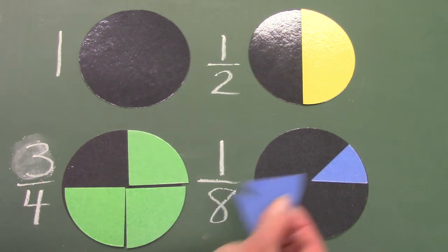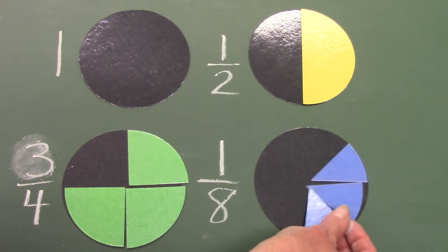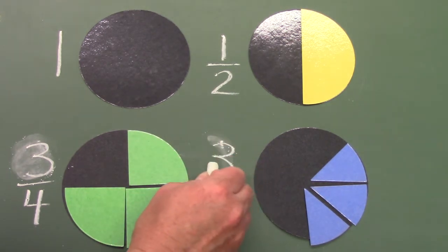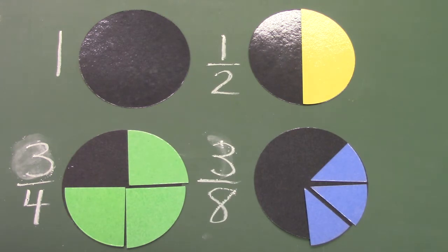Let's put a couple more of these one-eighth pieces. I can't say that I have one-eighth now. How many do I have? Three-eighths. You are right.